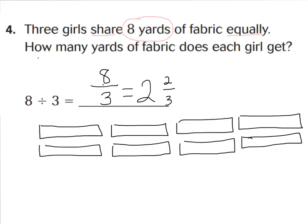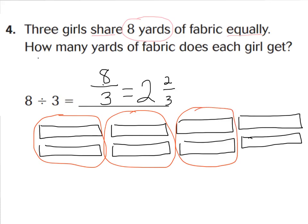Here's the model. Starting with eight yards — since we're sharing among three girls, each girl can get two yards so far. One, two, three girls can each get two yards. What's left over is two yards, so I'll change that into fractions. There are three girls to share the two yards among, so I cut these into thirds. Each girl gets one part of each, which is two-thirds — one-third plus one-third is two-thirds. Sally, for example, gets two whole yards and this orange section, which is two-thirds.